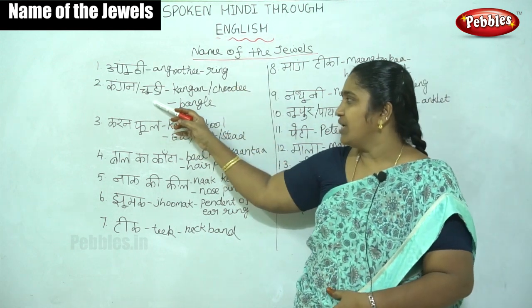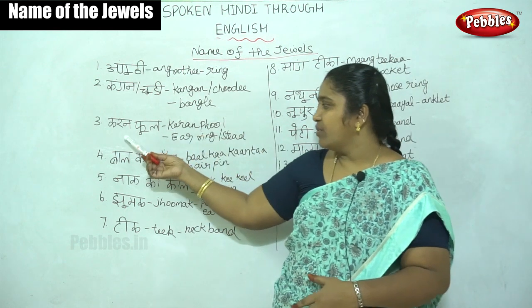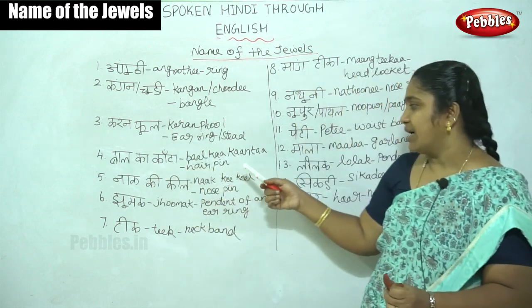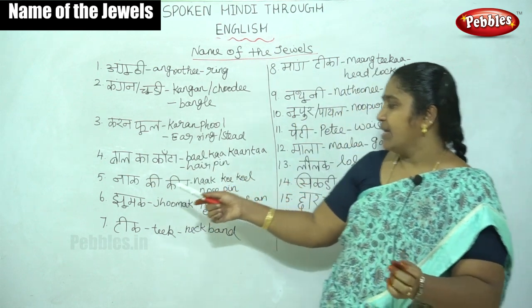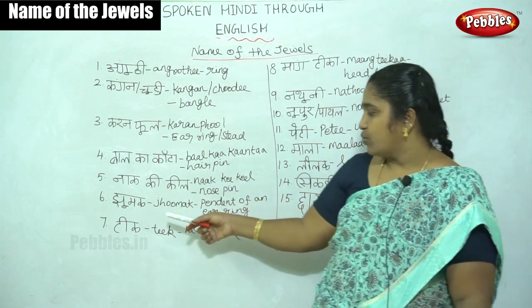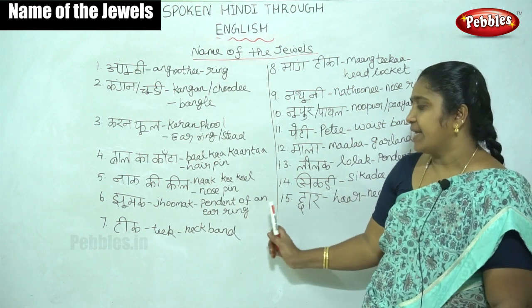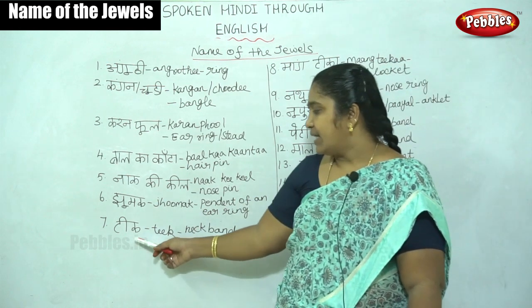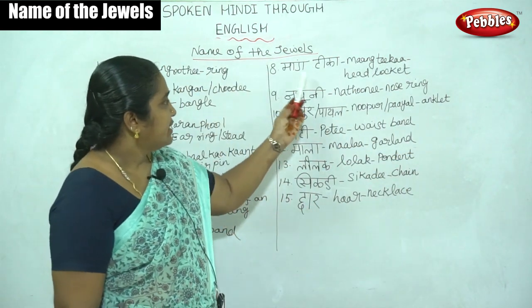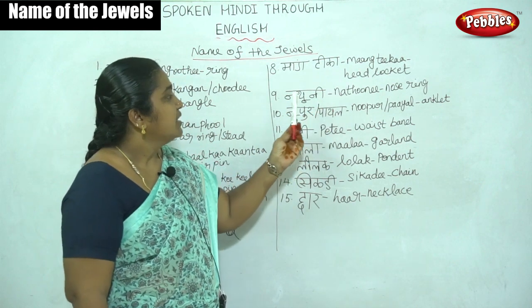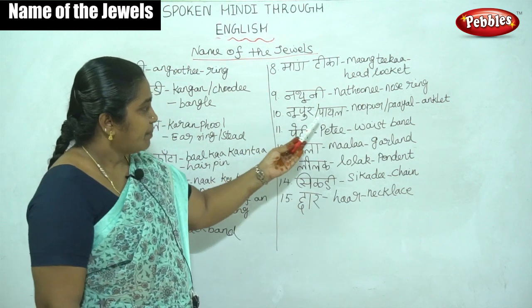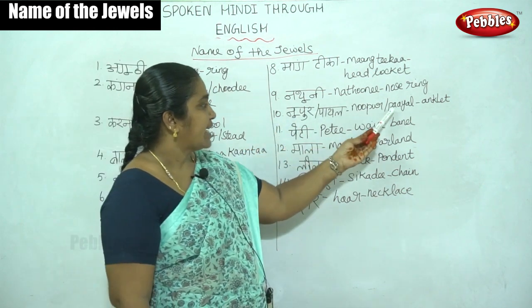Then Kangan chudi — bangle. Karanphul — earring. Balka kanta — hairpin. Then Nakhi keel — nose pin. Then Jumag — pendant of an earring. Then Teek — neckband. Maang teeka — head locket. Natuni — nose ring. Now Nupur and Payal — anklet.